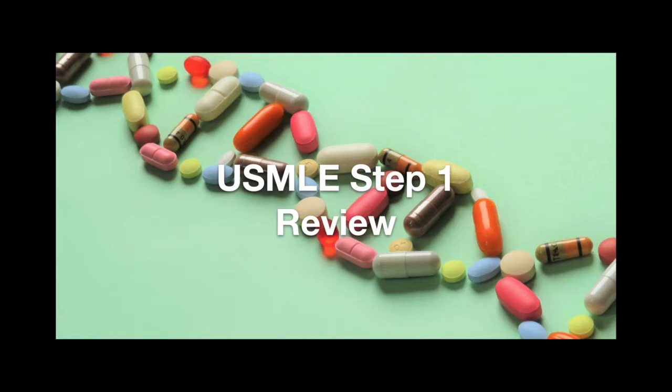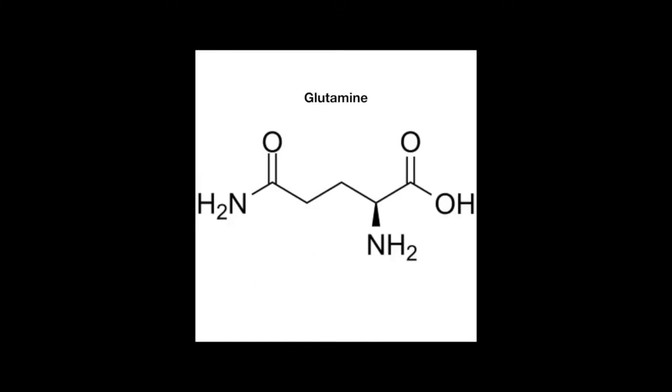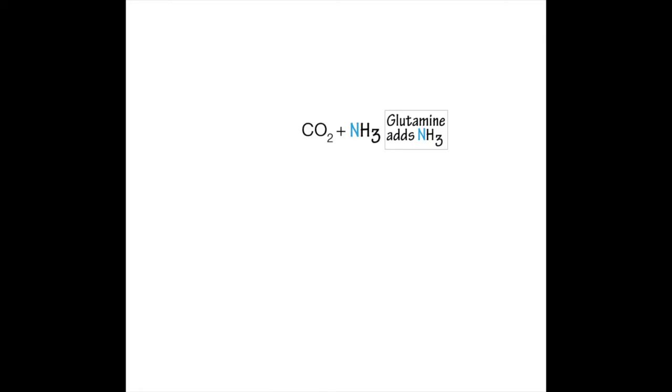Welcome to the Step 1 Review Study Guide, and in this lesson, we learn about pyrimidine-based production. First, glutamine is used as a source of an amine. Glutamine combines with CO2 and two ATPs as an energy source to produce carbamoyl phosphate.